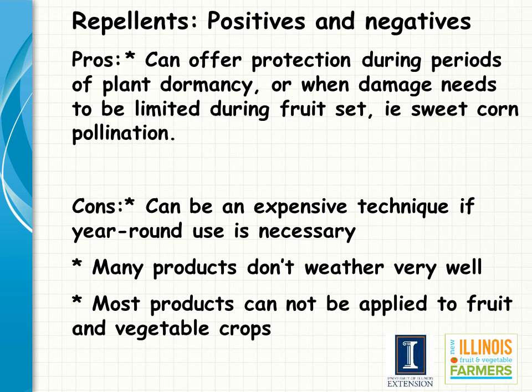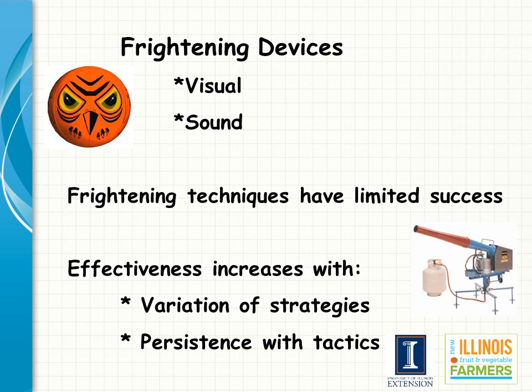Because repellents are more effective for short periods of time, they can be used to reduce damage when yields can be impacted during a specific time period. For example, deer can impact sweet corn yields through silk clipping during pollination. Area repellents can be used in conjunction with other techniques such as electric fencing to keep deer out of cornfields until pollination has occurred.